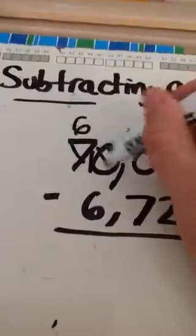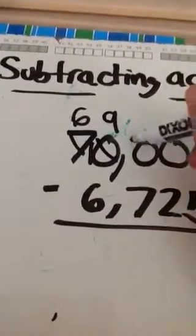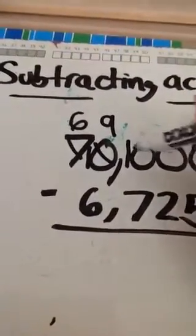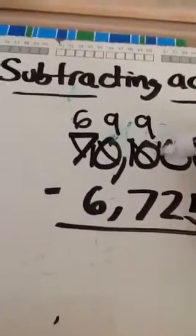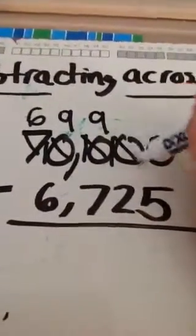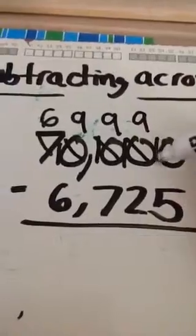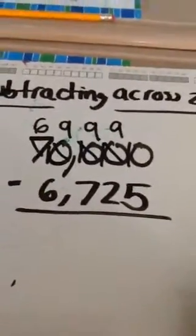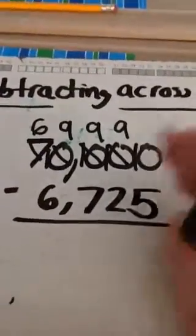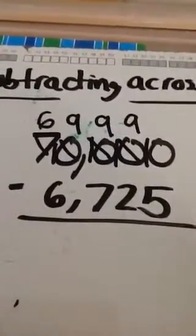We're going to make this a 10, cross it off, make it a 9. Make this a 10, cross it off, make it a 9. Make this a 10, cross it off, make it a 9. Then finally we get to the ones column and we're going to put in a 10. There's nowhere else to go, so we leave the 10 there.